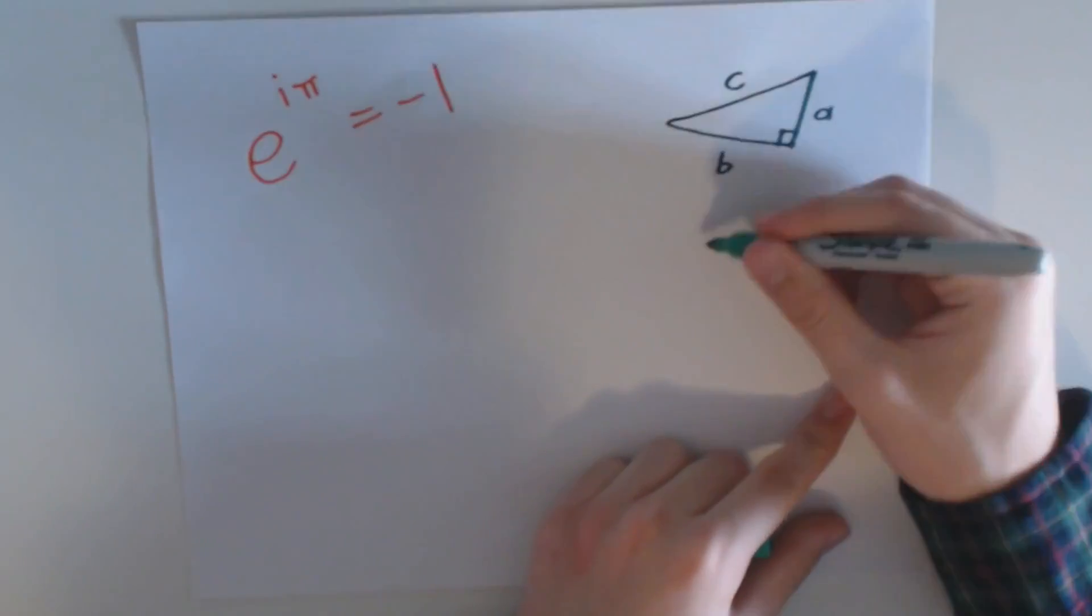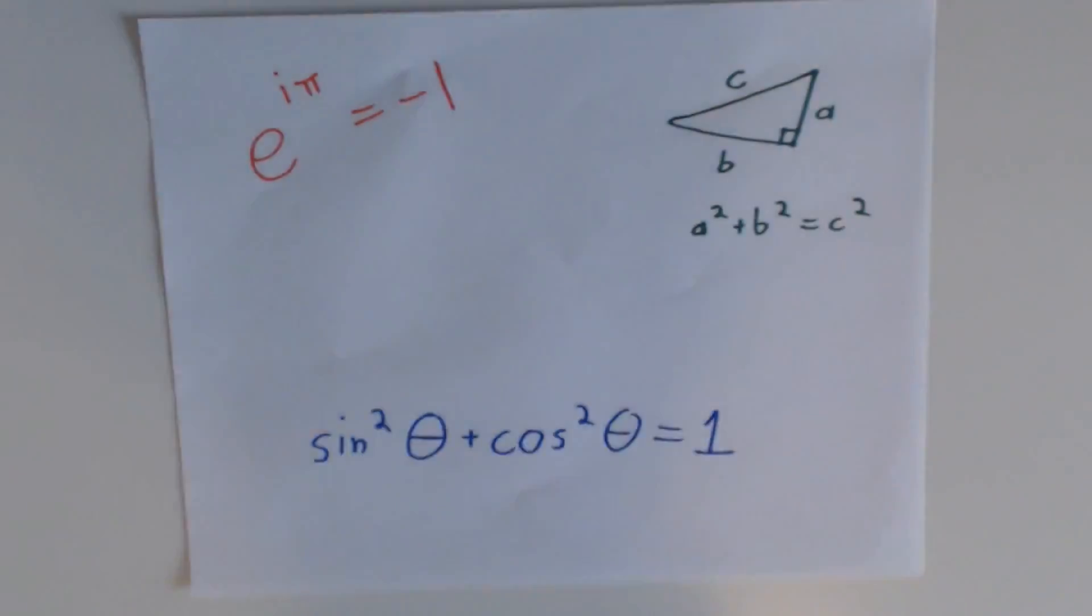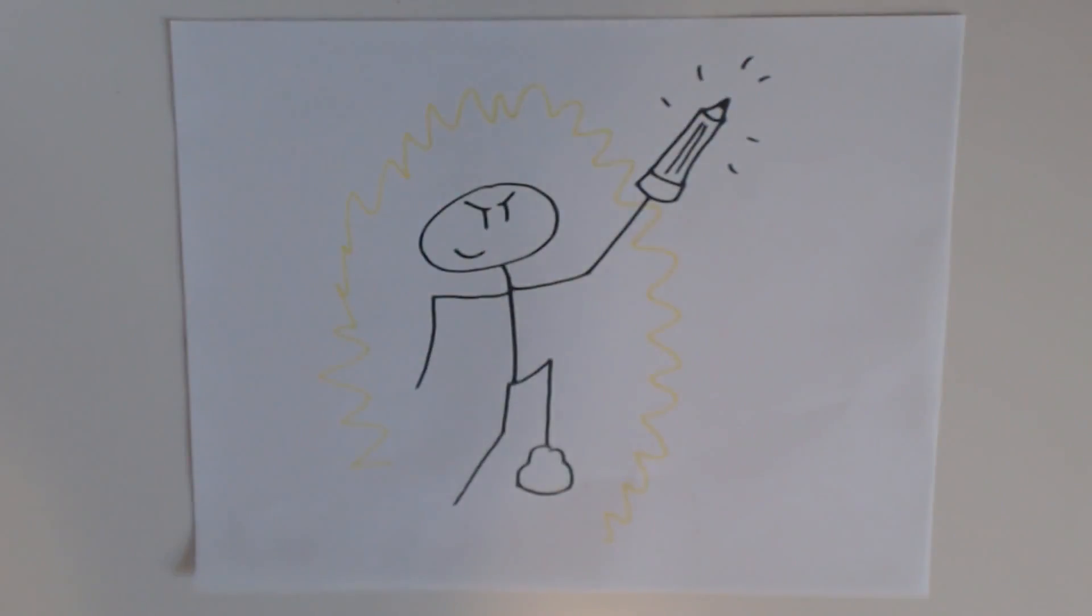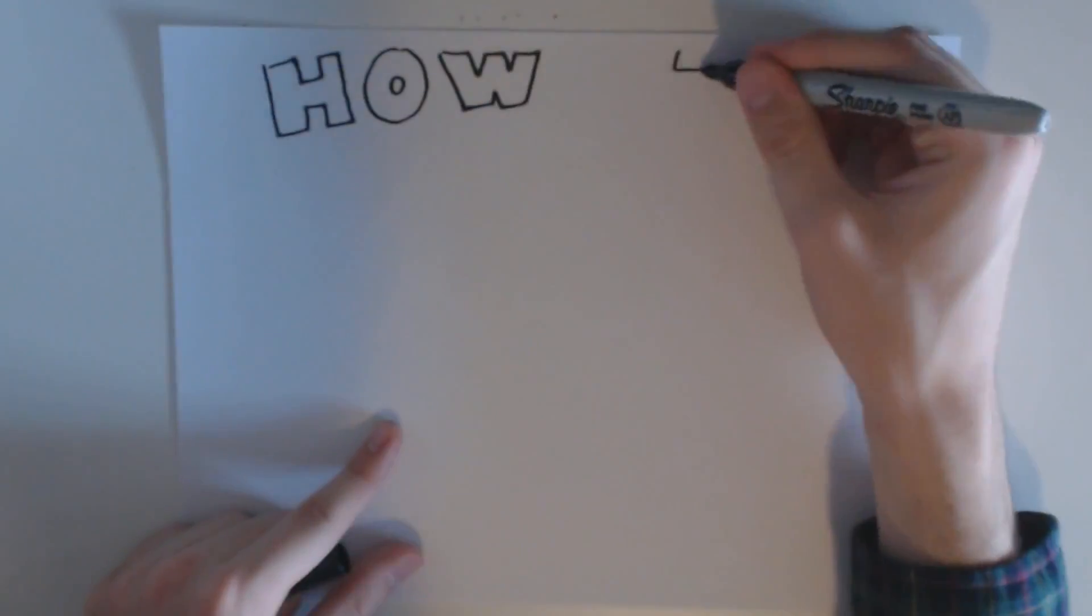How can something so elegant and unlimited as algebra fail at something that seemed so simple? Rather than take the textbook's word for it, I went on a quest to find an answer to the impossible problem. Here is my guide to dividing by zero.